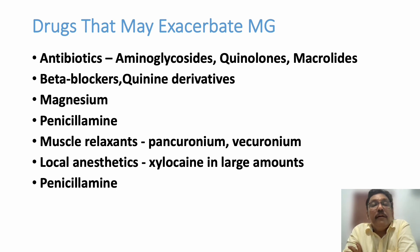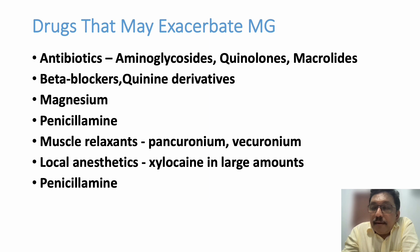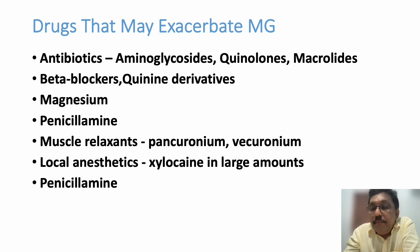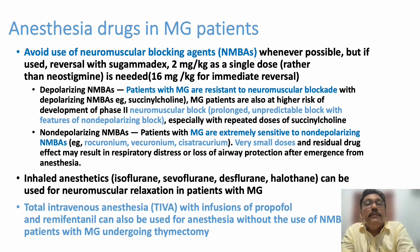Some drugs can exacerbate myasthenia gravis and must be avoided. Magnesium sulfate is important — used in pregnant ladies with eclampsia, so in myasthenia gravis with eclampsia we must be very careful. Penicillamine should be avoided. Muscle relaxants like pancuronium and vecuronium, local anesthetics like xylocaine — all can accelerate the disease. Avoidance of neuromuscular blocking agents in myasthenia gravis patients is critical.